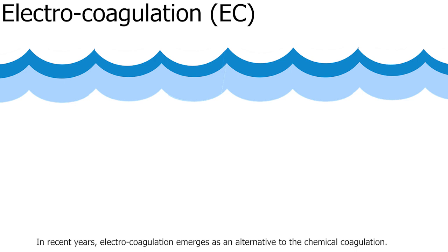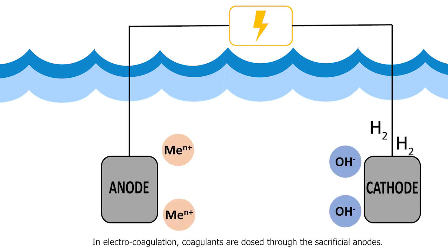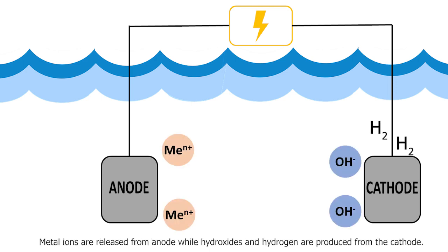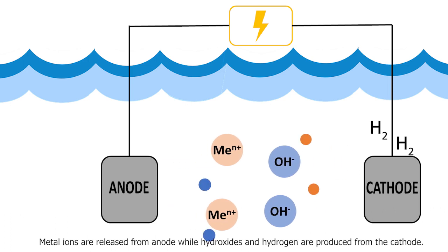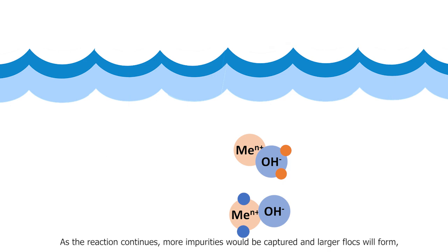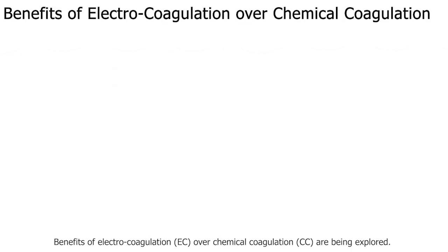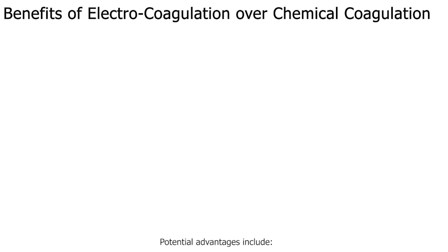In recent years, electrocoagulation has emerged as an alternative to chemical coagulation. In electrocoagulation, coagulants are dosed through sacrificial anodes — metal ions are released from the anode, while hydroxides and hydrogen are produced from the cathode. As the reaction continues, more impurities are captured and larger flocs form, which enhances their separation from the seawater.